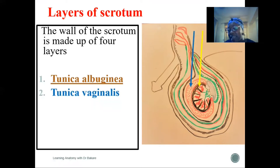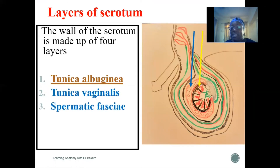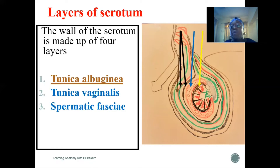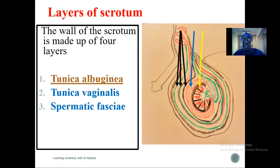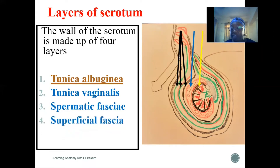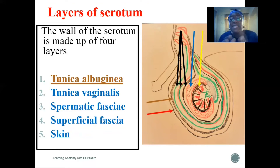The first layer is the tunica vaginalis, highlighted in red, which is the layer that overlies the tunica albuginea. The spermatic fascia, which is the next layer, is subdivided into three subdivisions: the internal spermatic fascia, the cremasteric fascia, and the external spermatic fascia highlighted in green. The next layer is the superficial fascia, and after that we have the skin. This is how the wall of the scrotum is structured to house the testes.